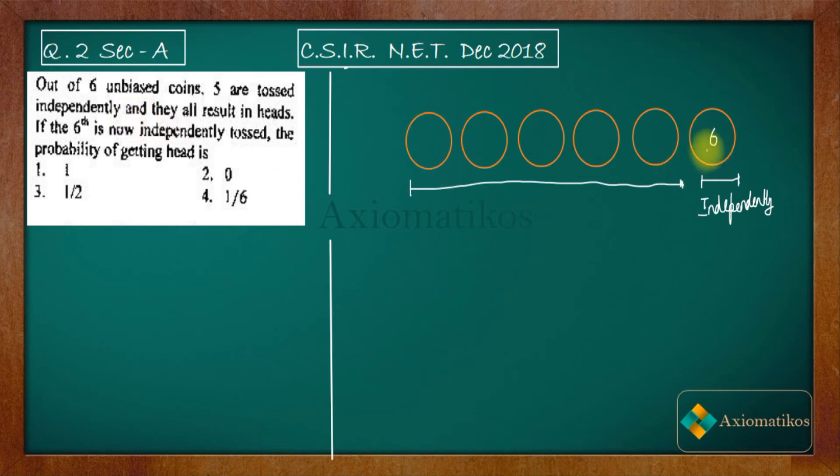So when you will toss it independently, the probability of getting head will be 1/2 and the probability of getting tail will be 1/2, because you have only two cases - either head will appear or tail will appear.